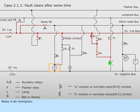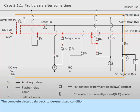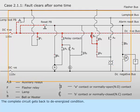Relay A de-energizes. The lamp loses supply due to opening of contact A sub 3. Hence, the lamp goes off. The complete circuit gets back to de-energized condition.